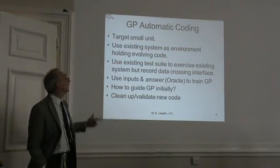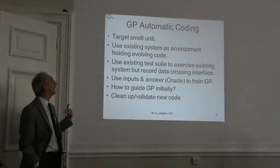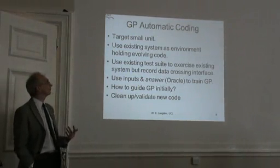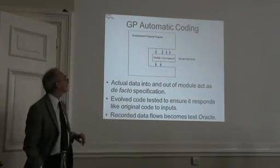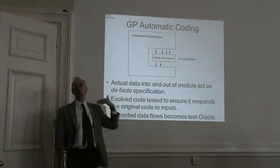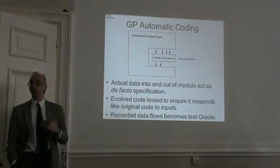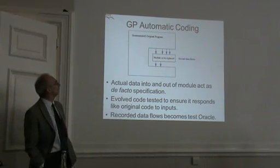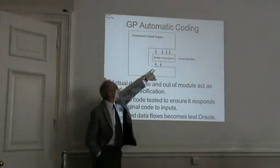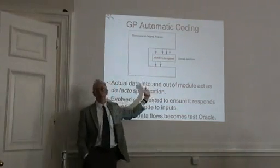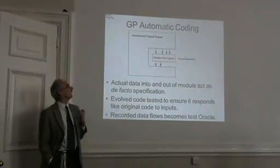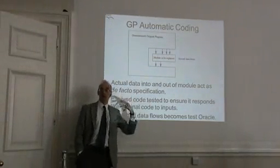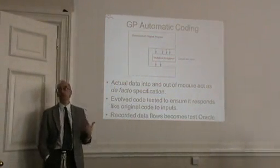We want to target a small system. The Gizmo approach is to use an existing implementation as a framework. This big box represents the existing system — we're taking from that an existing module which we want to port, maybe from a PDP-11 to a mobile phone or something. We highlight a small fraction of the code which we want to automatically translate to a new environment. We run the existing system and instrument it so we know the data flows into that module and the data flows out, and that becomes the training data — a de facto specification for the replacement module.